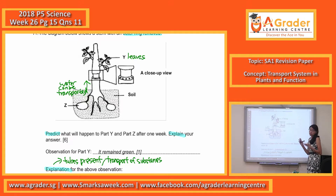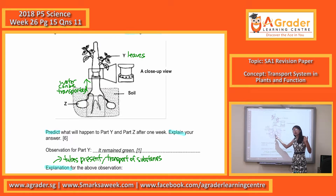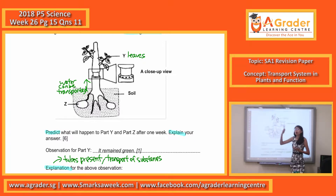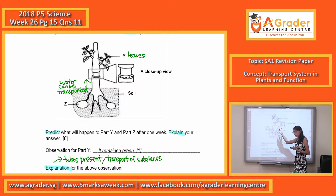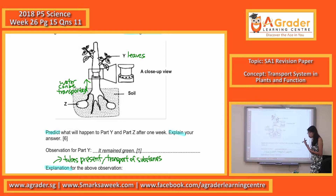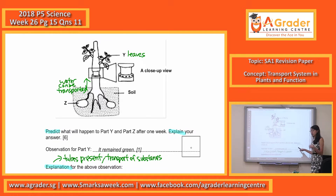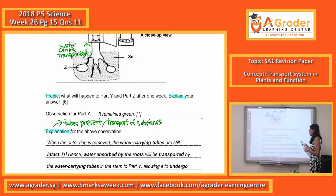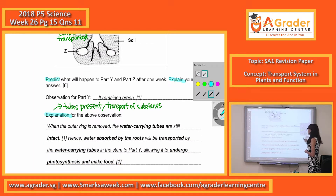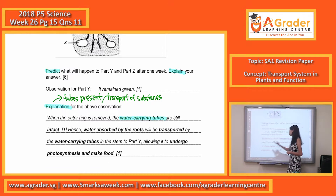You have to mention that first, water is being absorbed by the roots. Water absorbed by the roots is able to be transported up through the water-carrying tube to the leaves and other parts of the plant. When it reaches the leaves, the leaves are able to make food and undergo photosynthesis. So the plant can still survive. The key thing to mention: the water-carrying tube is still intact.